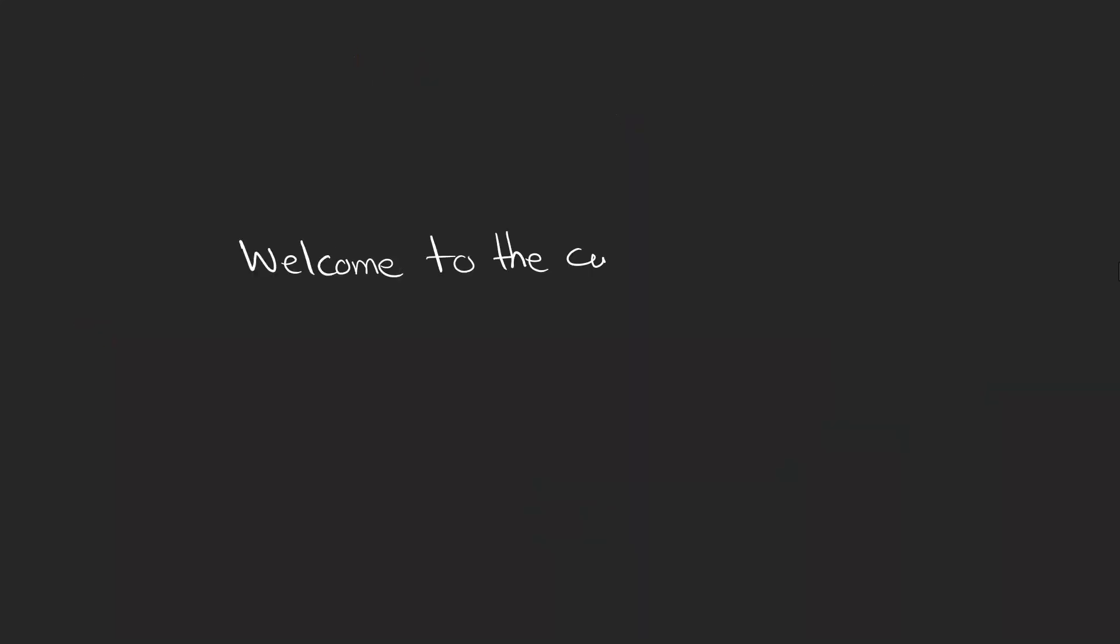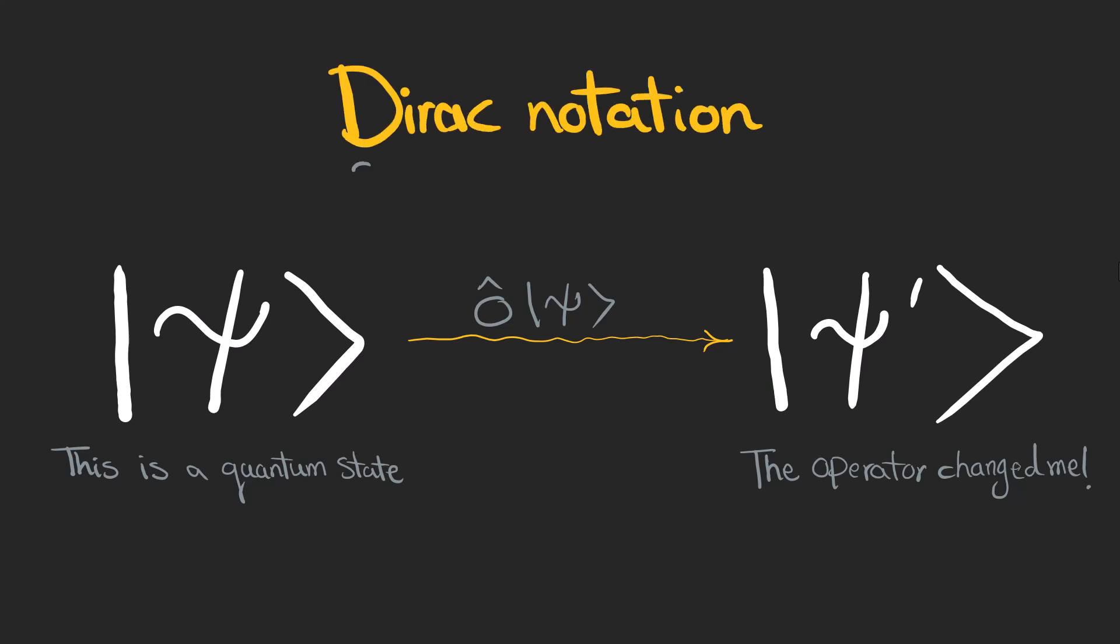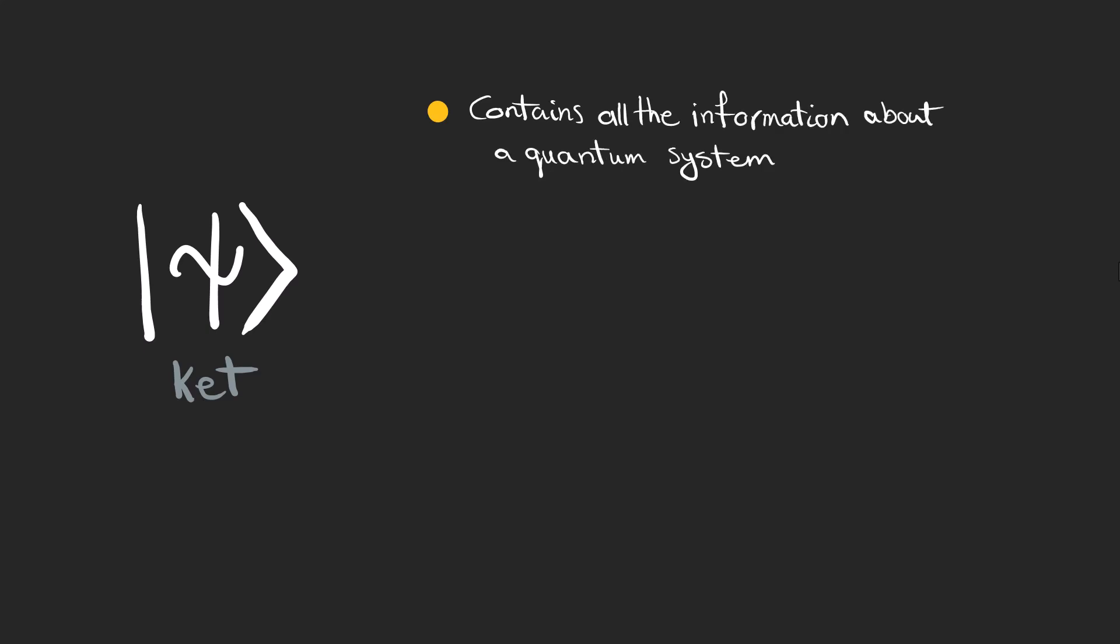So let's not get too emotional and start talking about the quantum world. To describe quantum states and their transformations, we use a compact and powerful mathematical framework called Dirac notation, which is also known as bracket notation. Cat vectors represent quantum states that contain all the information about a quantum system, such as a particle.